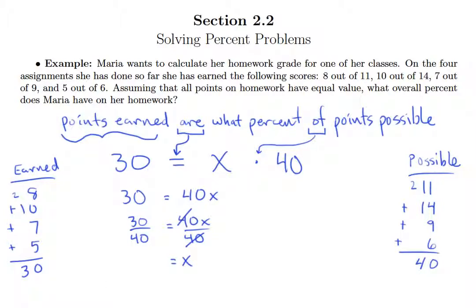Well, since both 30 and 40 end in a zero, you can definitely cross those zeros out. So we have three-fourths, and of course three-fourths is the fraction form of the percent.